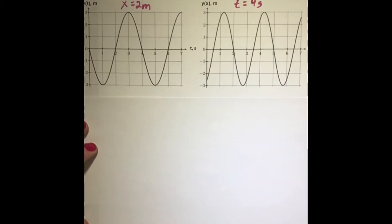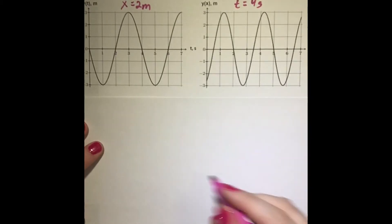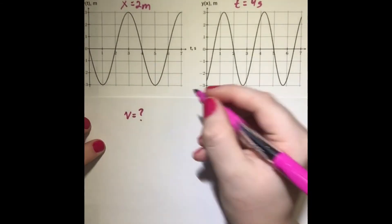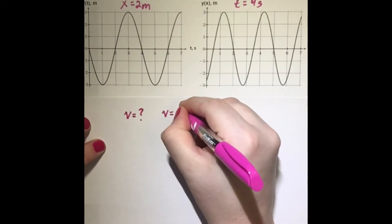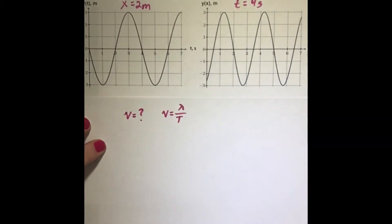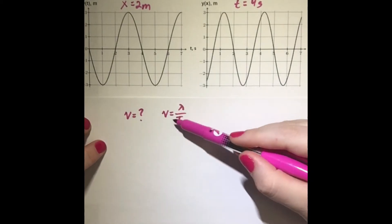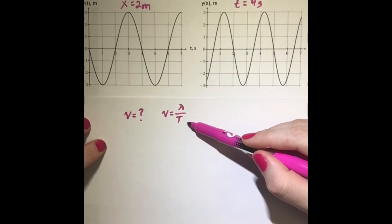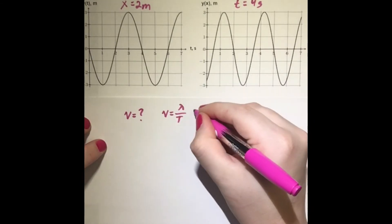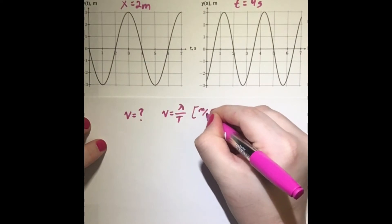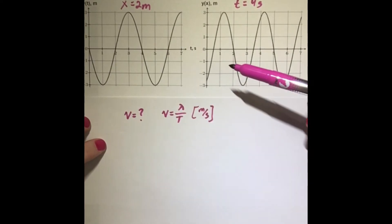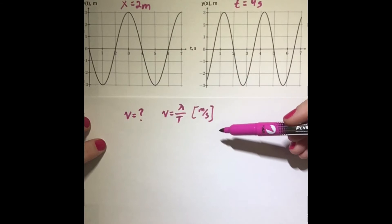We can look at these two graphs, find similarities, and figure out how this wave is behaving. Our first question is: what is the velocity of this one-dimensional wave? We are given the equation velocity equals wavelength over period. This makes sense because velocity is measured in meters per second, wavelength in meters, and period in seconds — so our unit analysis checks out.